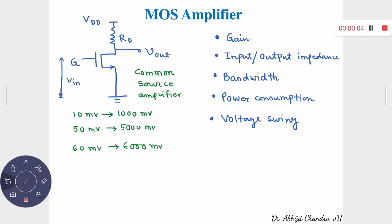In the last class we were discussing the MOS amplifier. To start with, let us once again take a look at the simplest model incorporating this MOS device. You have a resistor connected between the drain and the power supply line VDD, and the source is connected to DC ground. The different characteristics of any amplifier remain the same whether it is made by BJT or MOS.